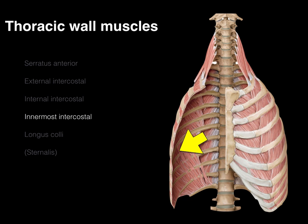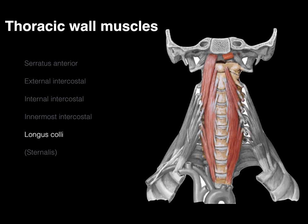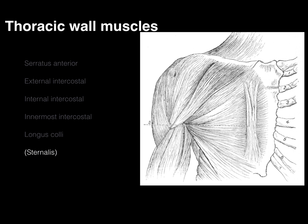Our innermost intercostal and subcostal muscles are found deepest among the intercostal muscles. The longus colli comes from the cervical vertebrae down to the upper thoracic vertebrae — not required for this unit. The sternalis is very rare; we dissected one a couple of years ago in the lab. These strap muscles are continuous with your rectus abdominis — your six-pack — coming all the way up into the chest. We no longer need to flex the sternum because its three bones are fused.